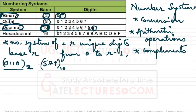Hexadecimal — 'hexa' means 6 and 'deci' means 10 — so this number system has 16 unique digits. From 0 to 9 there are 10 digits, and then 6 alphabets are also used. Why do we need alphabets?